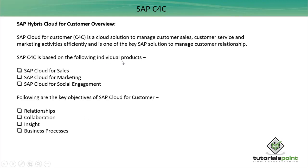SAP C4C is based on different sub-modules for different operations. SAP Cloud for Sales is used to manage sales activities like sales leads and sales quotations. SAP Cloud for Marketing is a sub-module used to manage marketing needs — you can run campaigns and improve marketing strategies. Social Engagement allows you to use different social websites for the growth of your business.